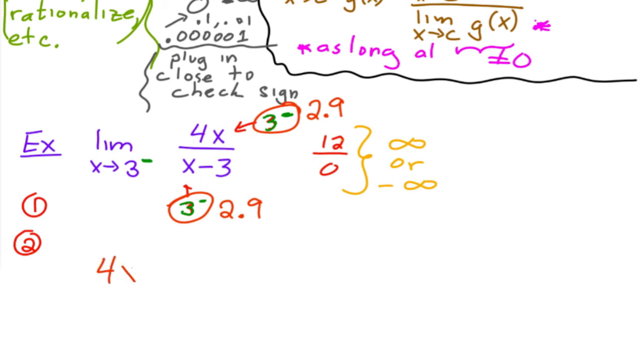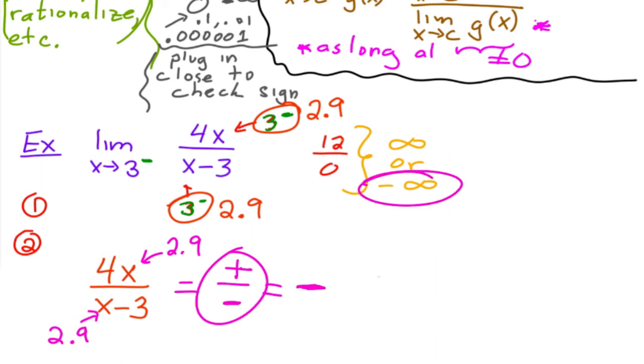So if you plug in, let me just write down 4x over x minus three. Okay. If you plug in 2.9 on top, do you get a positive or a negative number? Well, you're going to get a positive number. If you plug in 2.9 on the bottom, you get 2.9 minus three. That's going to be a negative number. You don't care what number it is. You just care that it's negative. And so then if you have a positive number dividing by a negative number, the result is going to be negative. So then you know that it's going to negative infinity. If this would have been positive, then you would have known it's going to positive infinity.